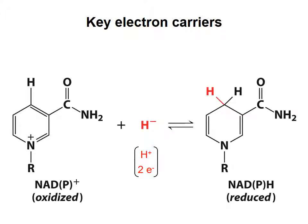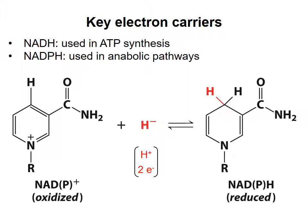In their reduced form, the molecules are abbreviated NADH or NADPH. Similar to the way cells use ATP as a source of energy for chemical reactions, they use NADH and NADPH as sources of electrons. Although NADH and NADPH are both reducing agents of equivalent strength and differ in structure by only a phosphate group, they have different roles in metabolism. Electrons from NADH are used primarily to regenerate ATP from ADP, while electrons from NADPH are used primarily in the synthesis of biomolecules.